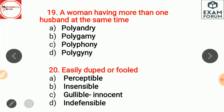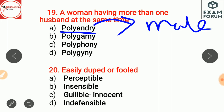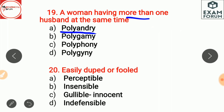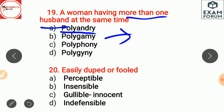A woman having more than one husband is polyandry — 'poly' means more than one, 'andry' means husband or male. Polygamy means the ritual of marrying more than once — 'gamy' means marriage. Polyphony is a musical composition where a number of notes are played simultaneously. Polygyny is a man having more than one wife — 'gyne' means woman.